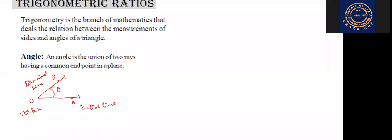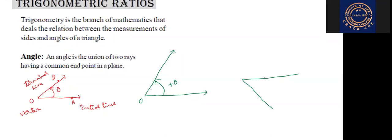Now, suppose this is a horizontal line and this is another line. This is O. The amount of rotation in anti-clockwise direction — the angle is regarded as positive. The amount of rotation in clockwise direction — the angle is regarded as negative. So: anti-clockwise direction means the angle is regarded as positive; clockwise direction means the angle is regarded as negative.